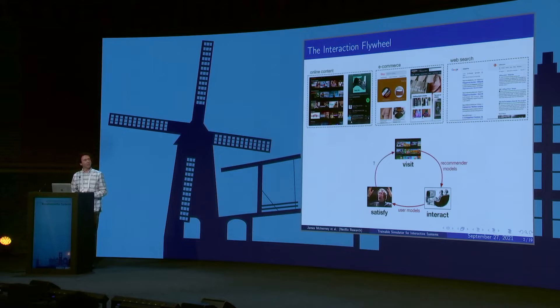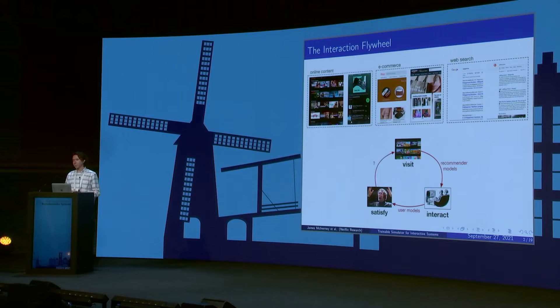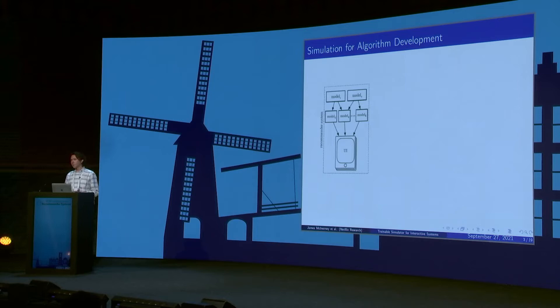Users visit, they interact with the recommender system, and are either satisfied or dissatisfied — with satisfaction broadly construed as anything that can influence future visits. Parts of this problem have been well studied: recommender models look at how interactions can be successful, and there are various user models for determining satisfaction based on log data. But relatively less work has been done on identifying the link between satisfaction and number of visits.